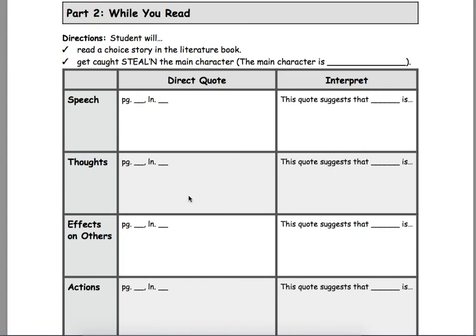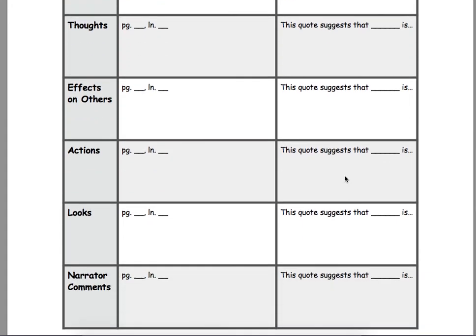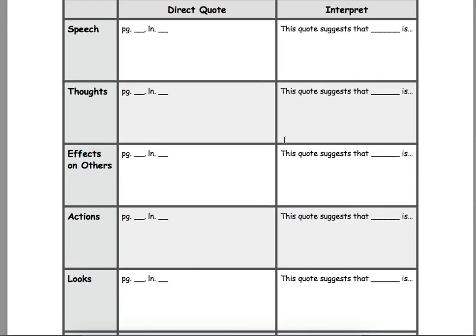Next, you'd put a quote about Aaron's thoughts, or T. What do his thoughts say about him? Next, his effect on others. Put the quote in here. What do his effects on others say about him? Do the same with actions, looks, and narrator comments. So, this table needs to be completed.